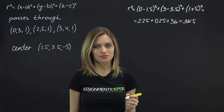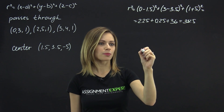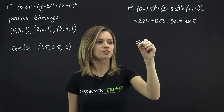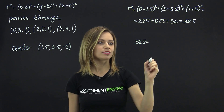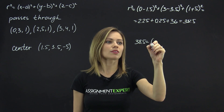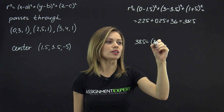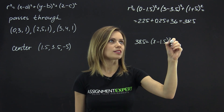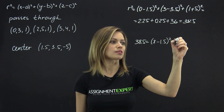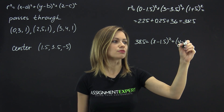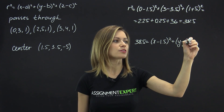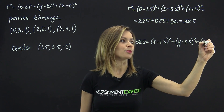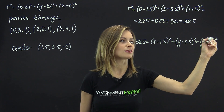Therefore, the equation of our sphere goes like this: 38.5 equals (x minus 1.5) squared plus (y minus 3.5) squared plus (z plus 5) squared.